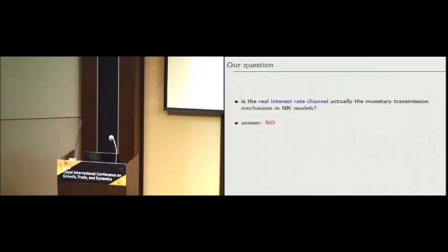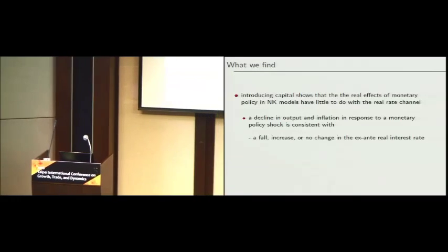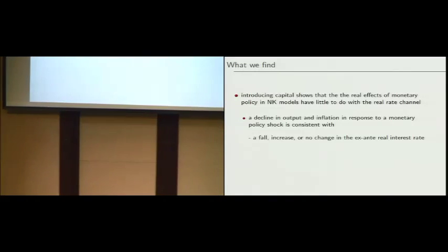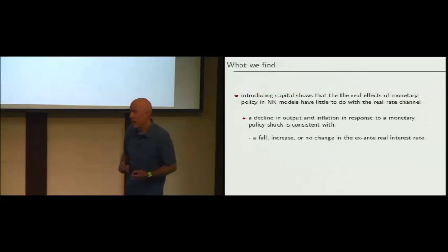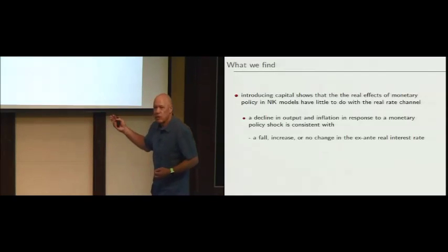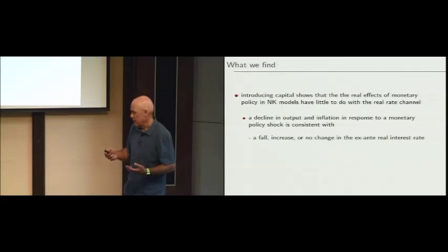Once you introduce capital into this model, it's going to make everything much more difficult for this model to behave properly. As always in these models, people want to consumption smooth. Once you add capital, it's going to make it very easy to consumption smooth. And because you consumption smooth, that doesn't get you anything like the Bernanke-Gertler picture — and in fact, that's the reason you have to have capital adjustment costs. You've got to stop people from consumption smoothing. A decline in output and inflation in response to a monetary policy shock in the New Keynesian model is consistent with a fall, increase, or no change in the ex-ante real interest rate.